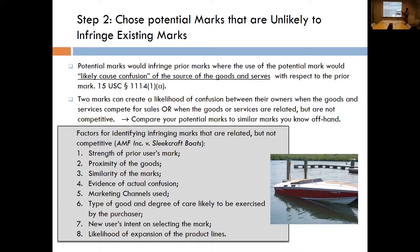An additional factor to consider when choosing the type of mark to register is whether there's a likelihood of customer confusion. If there already exists a mark in the marketplace and you see it exists in connection with completely separate goods or services, that's totally fine. That's why we have Dove Chocolate versus Dove Soap — those are fully separate categories and it's very unlikely that customers would be confused. The Sleepcraft case is one of several cases that goes through the different analyses used to determine whether there would be a likelihood of customer confusion.